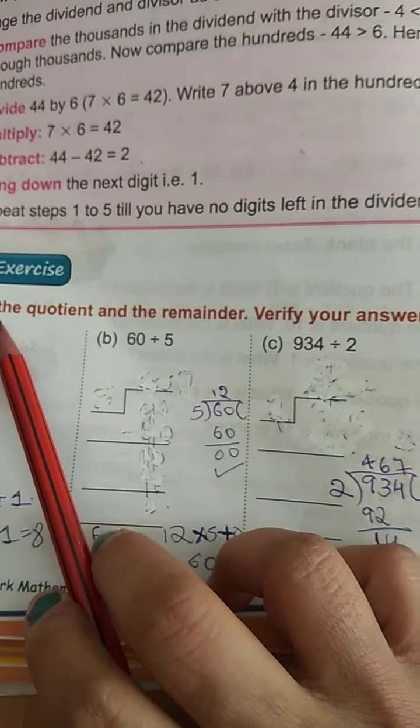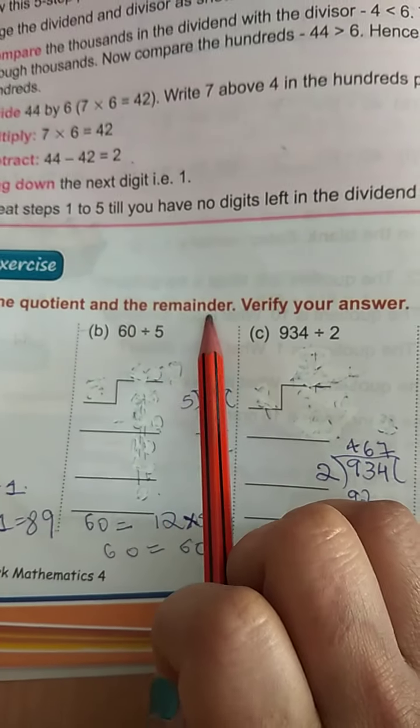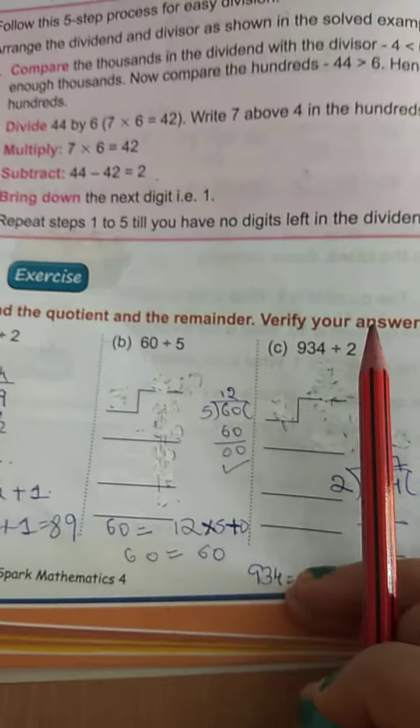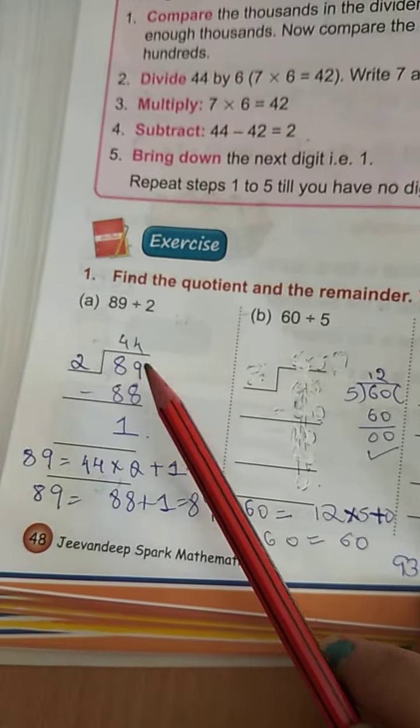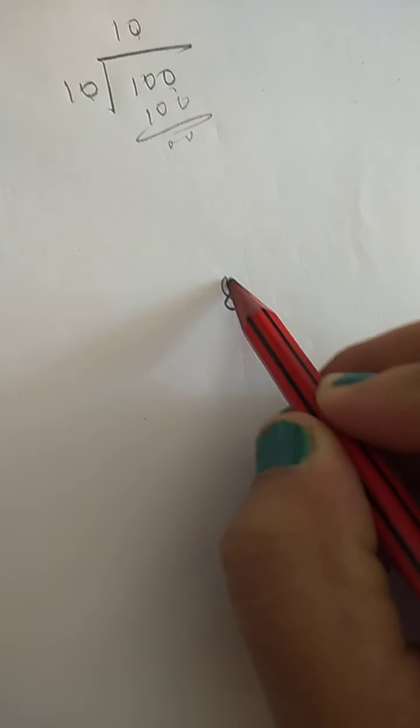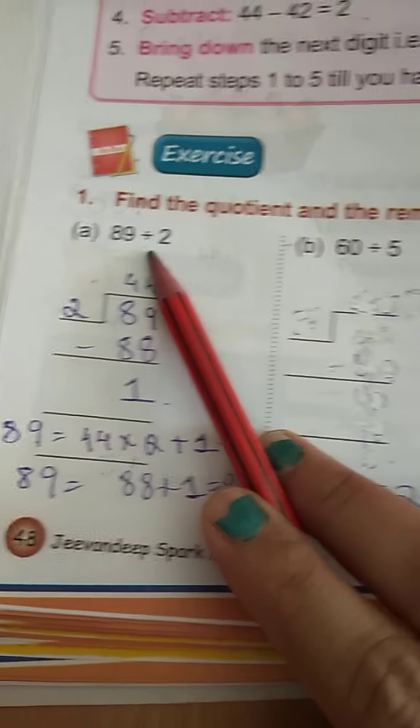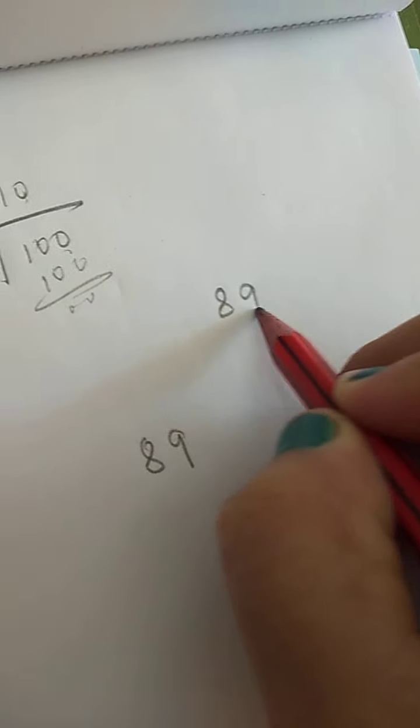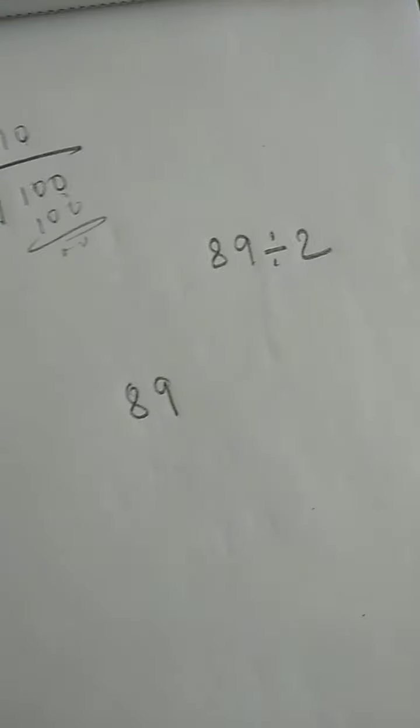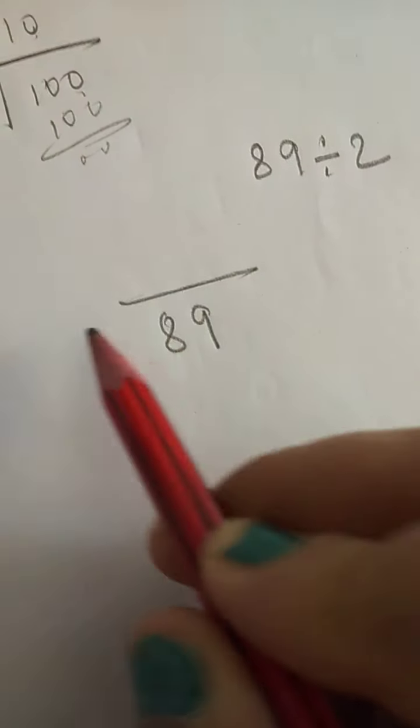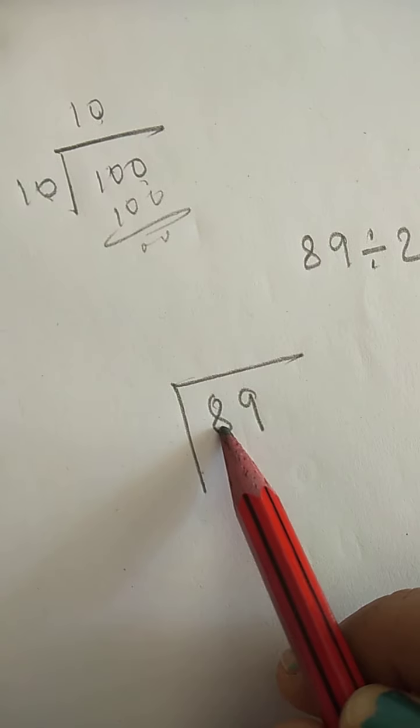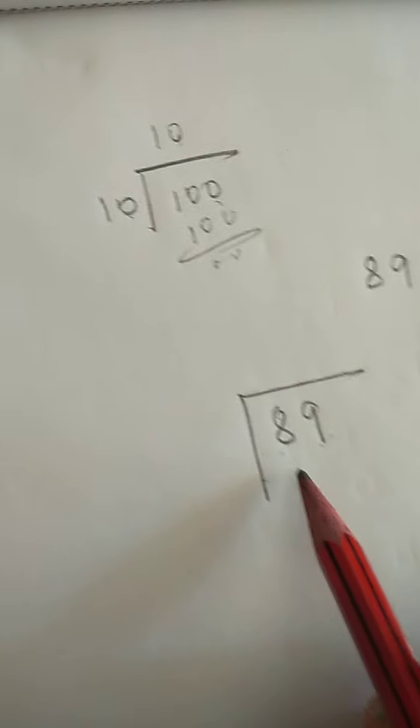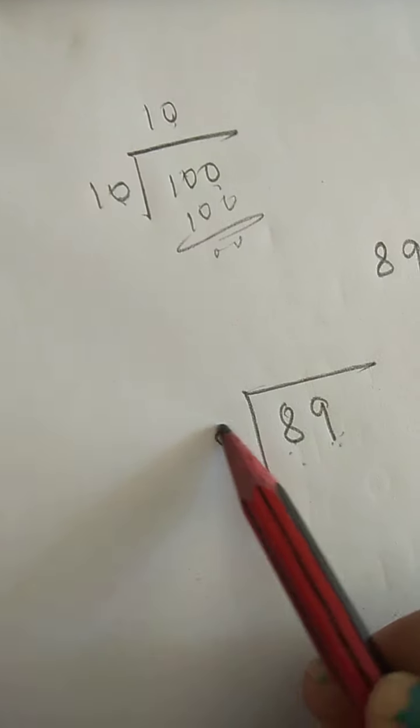Now here you have to find the quotient and the remainder and you have to verify your answer. I'll teach you how to do this sum. Now they have given 89 divided by 2. The way you have to do this sum is, see, here they have given 2 digits. 89, you have to divide it by 2.